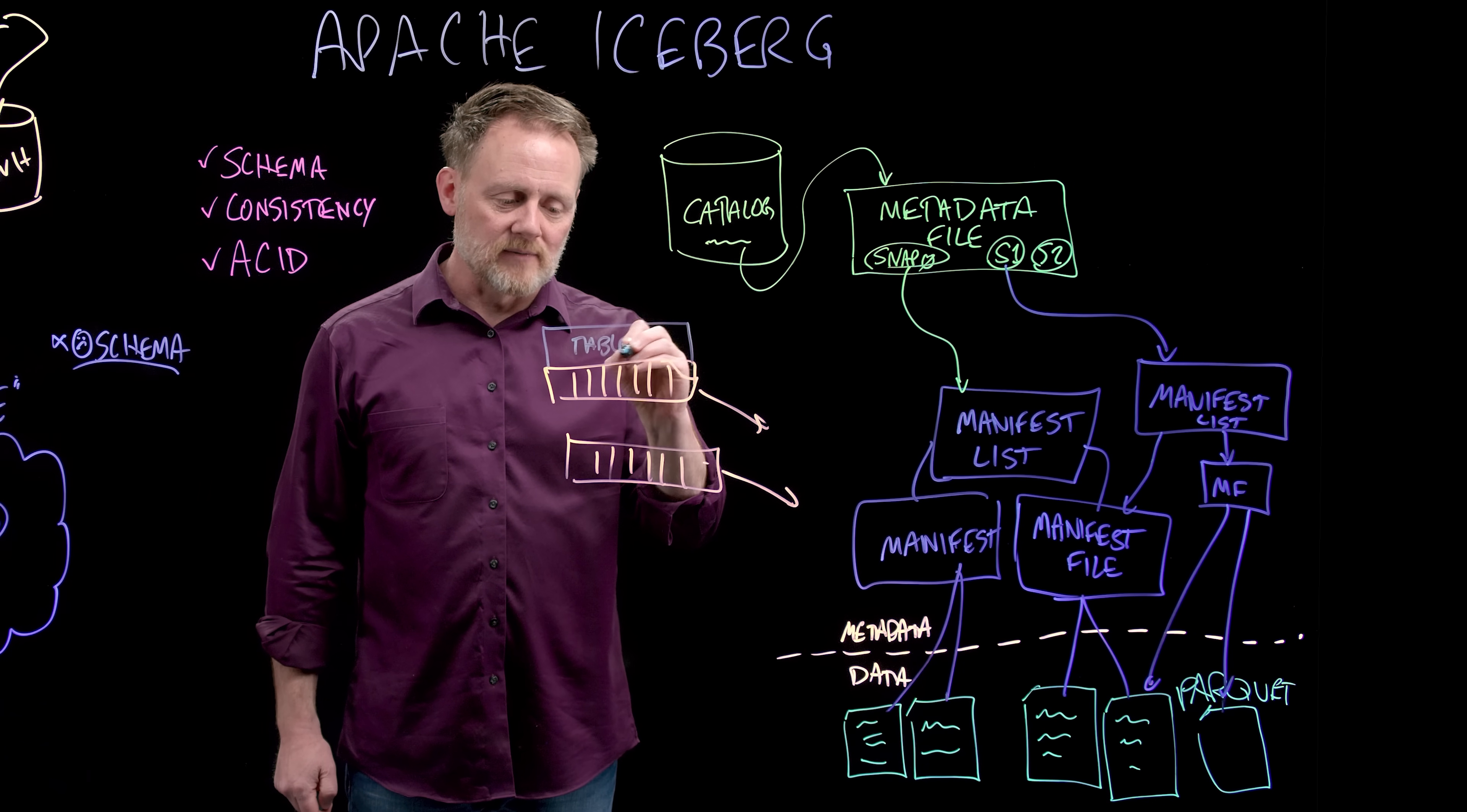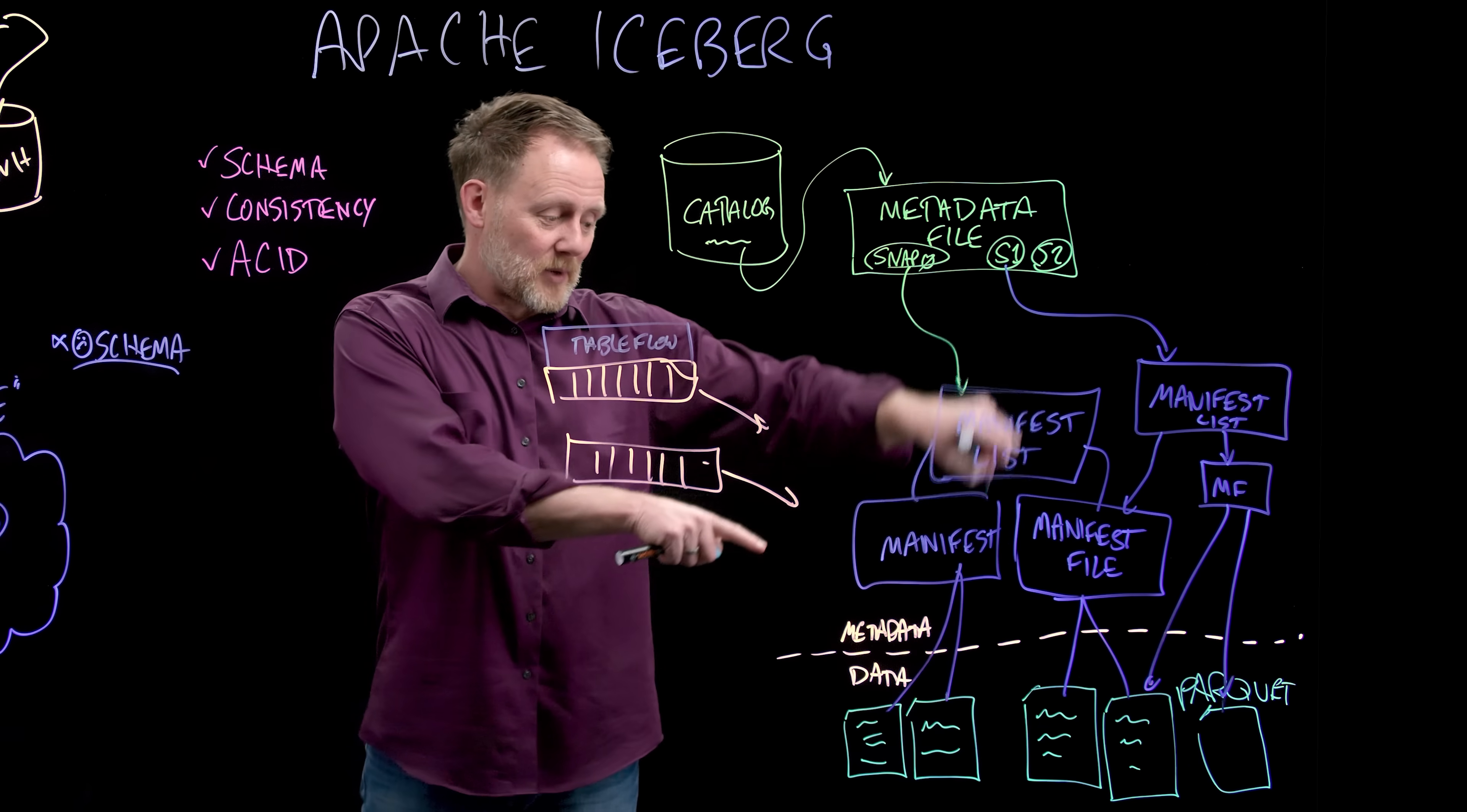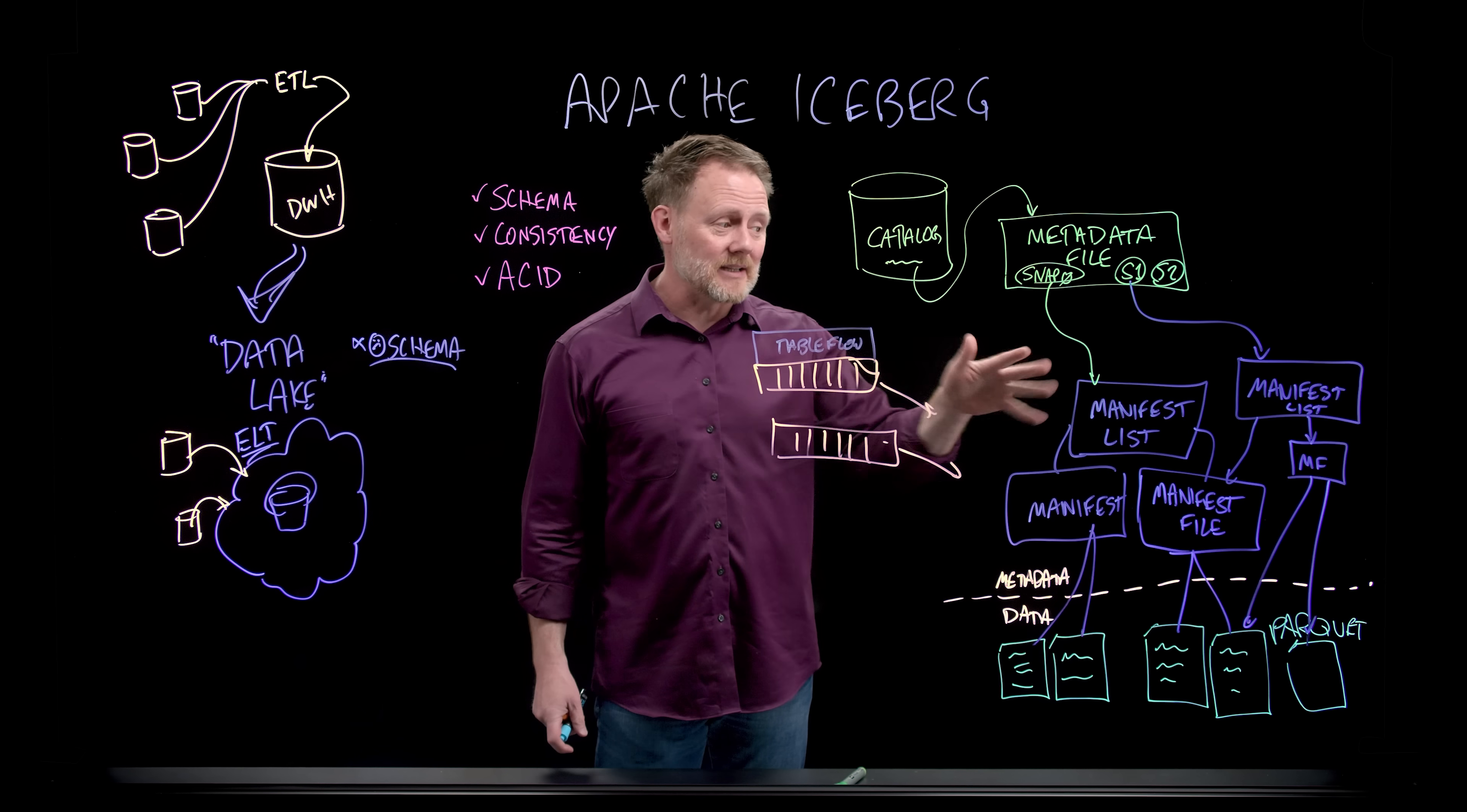And that is what Confluent calls Tableflow, which is a way of making the data in a topic accessible as an Iceberg table. So changes to that topic, changes to the schema through the schema registry and the governance features of Confluent Cloud, keep all of the appropriate manifest files, lists, and metadata files updated. So however it is you are accessing Iceberg, you point it at your Kafka topic, and that works without the old copy from there to here kind of thing, which is kind of cool. A lot of neat things are happening.